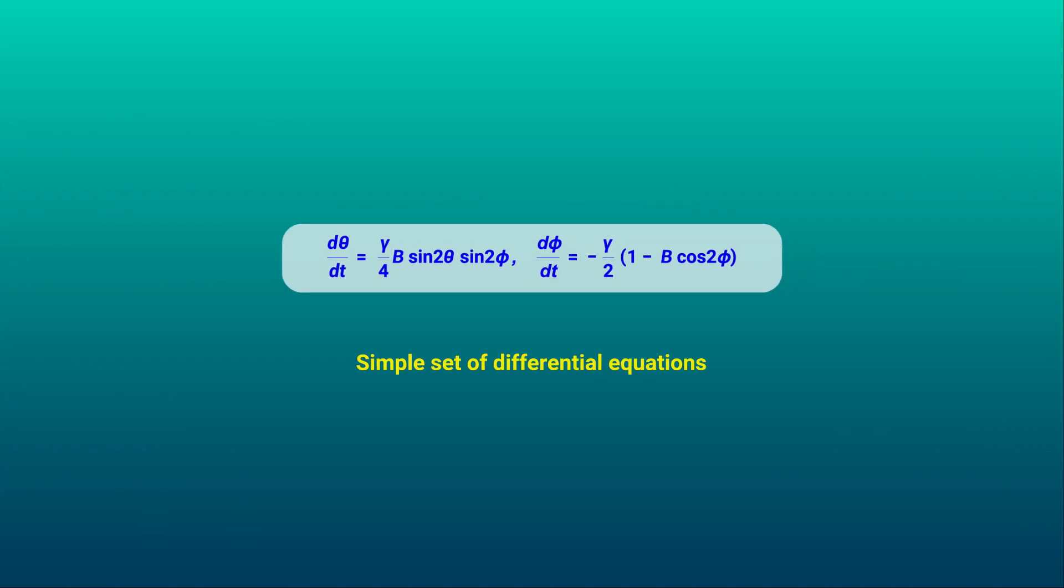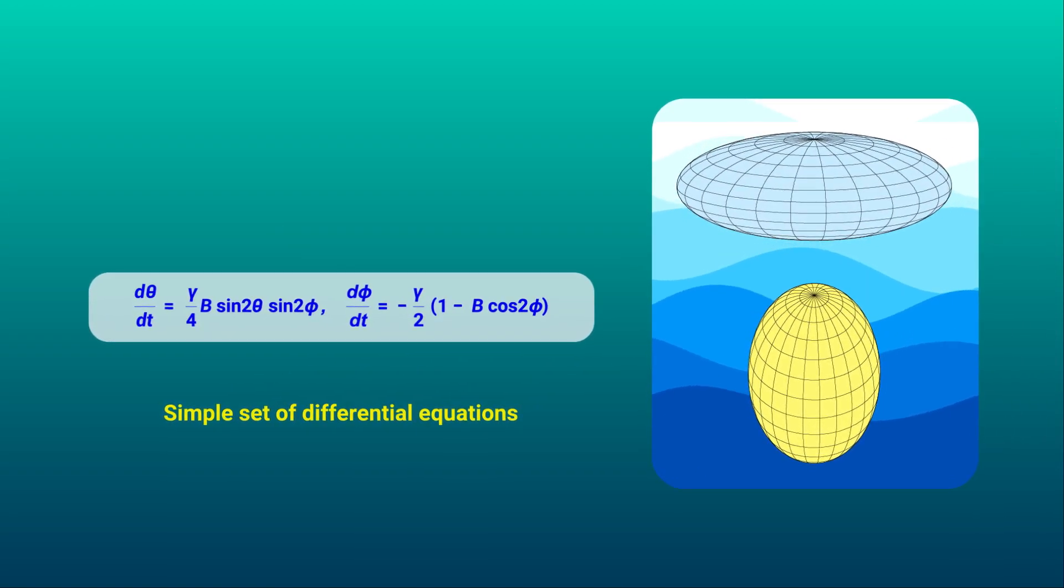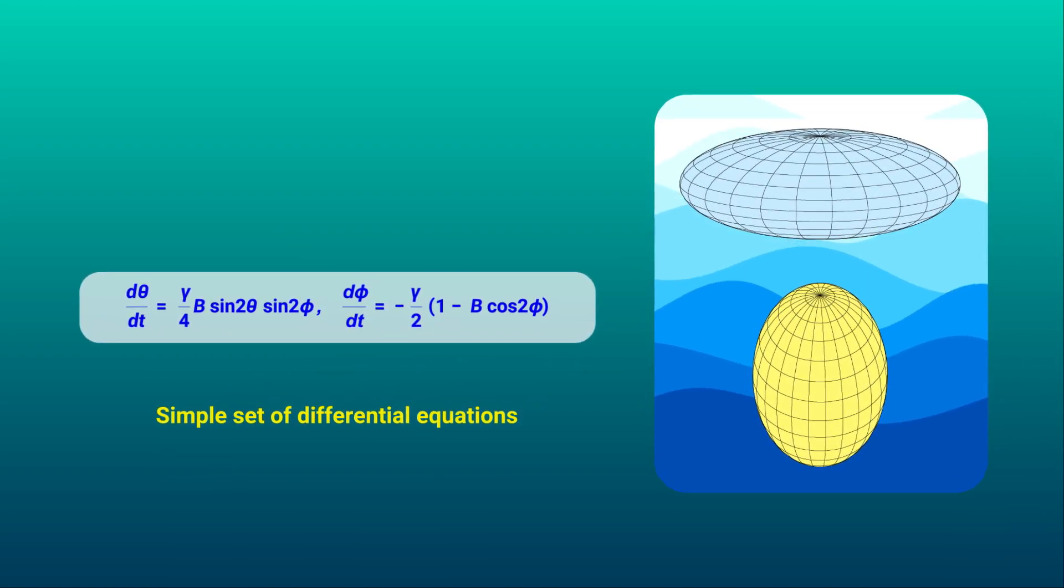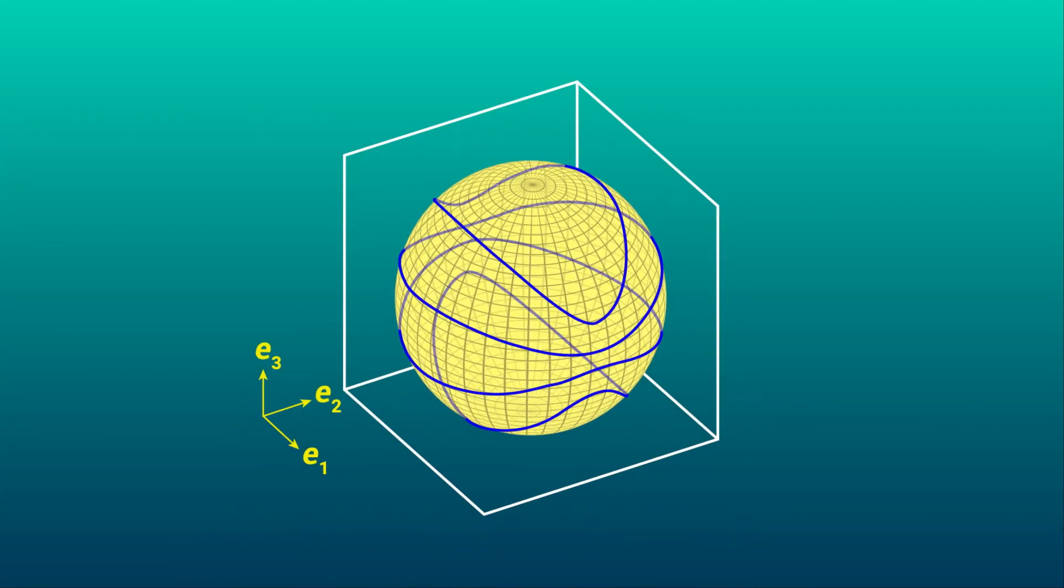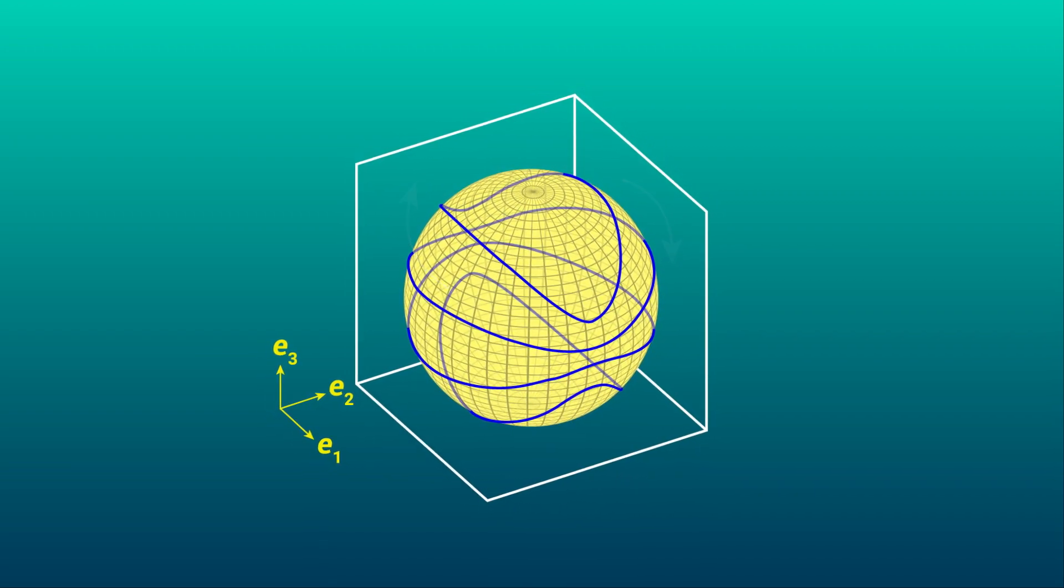These are a simple set of ordinary differential equations that describe how the orientation of a spheroidal body evolves over time in a viscous fluid. The non-uniform periodic rotational motion of a body immersed in a simple shear flow traces a closed orbit known as Jeffrey's orbit.